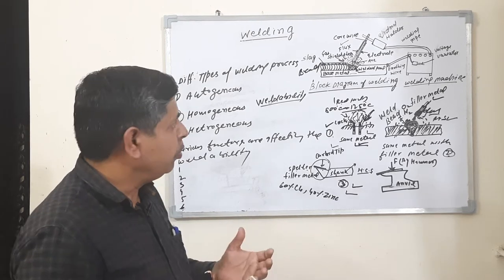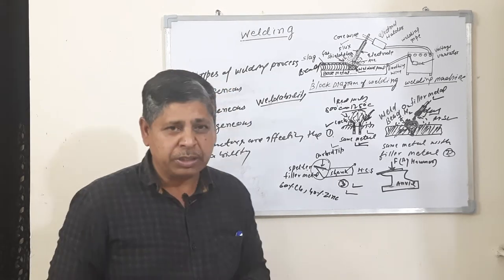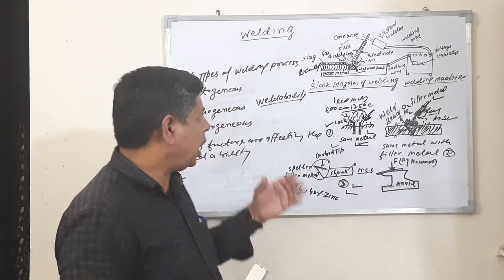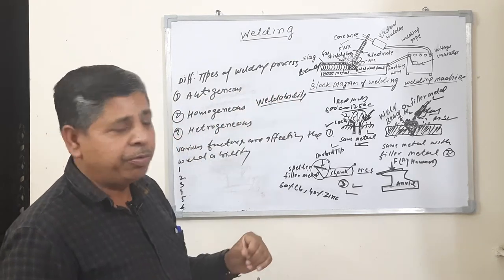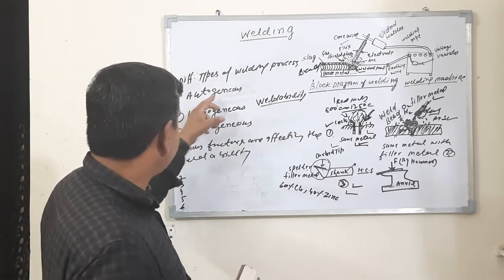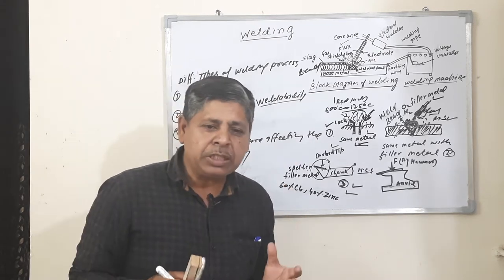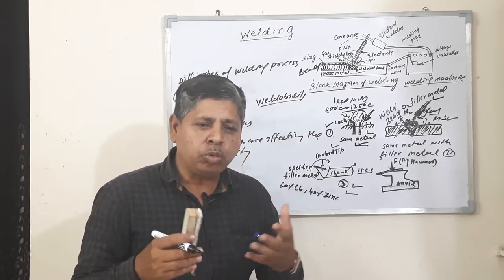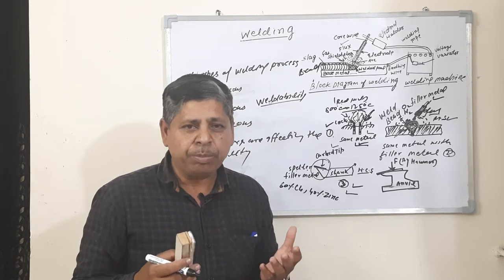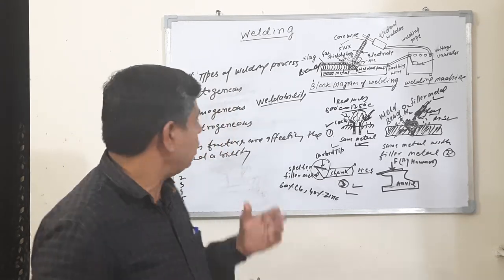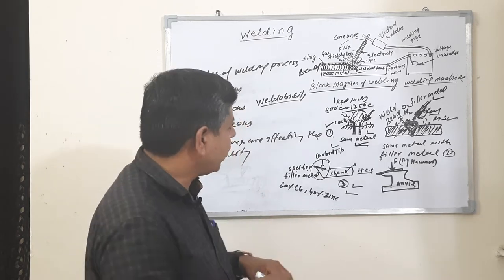Welding is performed with different types of welding processes. There are three types of processes used to perform welding. Number one is autogenous — the process of joining two similar metals without any filler metal. This process is called the autogenous process.